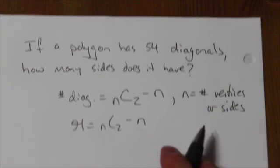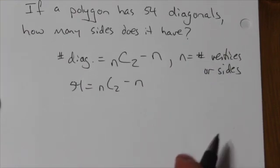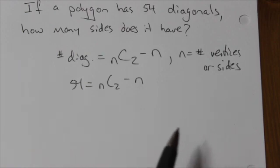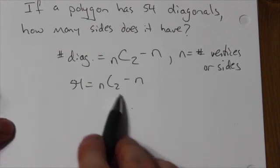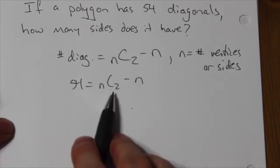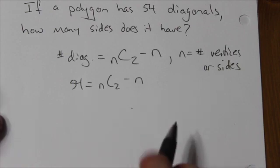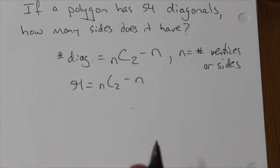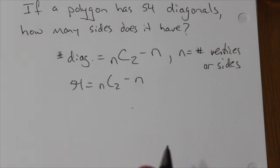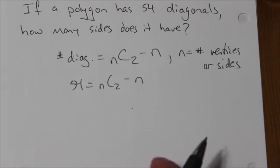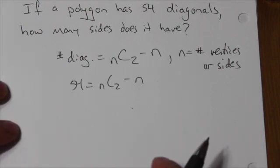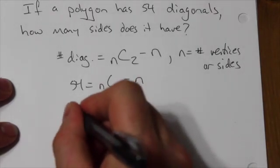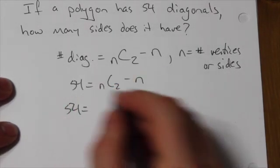So really, what's important here is that this is a combination question. And this is about as difficult as they would let them get, because if it was n choose 3 or higher, then the resulting polynomial becomes a cubic or a quartic. And although you are capable of solving those, the amount of work just becomes that much more, and they wouldn't expect that on a major exam. So this is the limit.